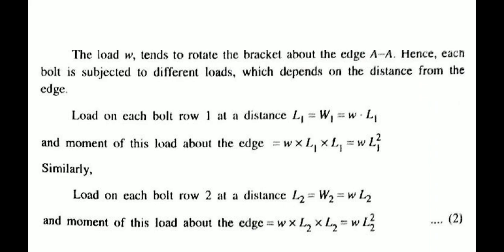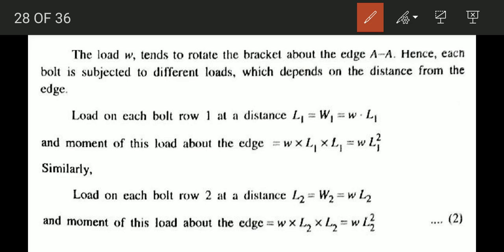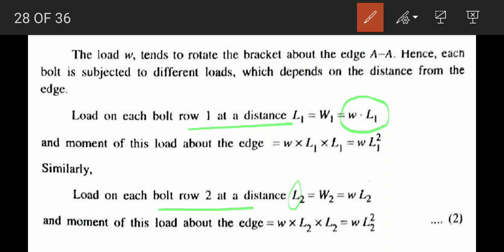Load W tends to rotate the bracket about the edge AA. Hence the bolt is subjected to different loads which depends on the distance from the edge. The distances are L1 and L2. The load on the bolt at distance L1 is W1 equal to small w into L1, and W2 equal to small w into L2.